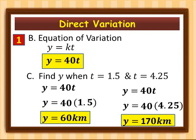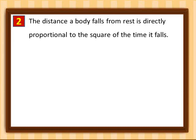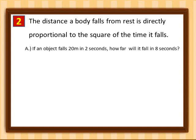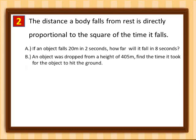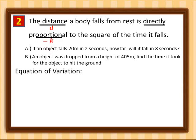Let's proceed to the second example. The distance a body falls from rest is directly proportional to the square of the time it falls. Part a: if an object falls 20 meters in 2 seconds, how far will it fall in 8 seconds? Part b: an object dropped from 405 meters — find the time it took to hit the ground. The equation of variation is d is equal to k times t squared.